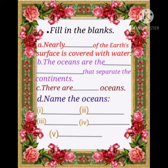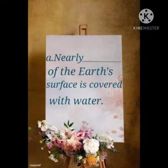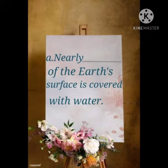Fill in the blanks. Let's read. First is: nearly dash of the Earth's surface is covered with water. Write 70% in the blank. Nearly 70% of the Earth's surface is covered with water.